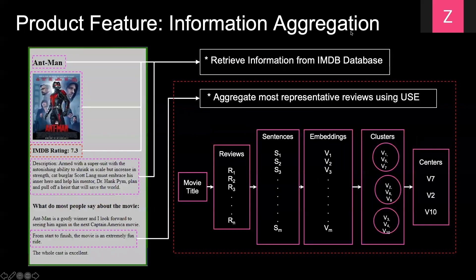Our first feature group is the aggregation of all essential information the user frequently needs to assess a movie's watchability, such as its description, posters, and IMDB ratings. Additionally, many of our alpha and beta users expressed that the bulk of time was wasted scrolling through reviews to identify the main sentiment toward a movie. To solve that, we included a review aggregation algorithm that extracts the three most representative review sentences using the Universal Sentence Embedding technique and then clusters them to find the most representative three.